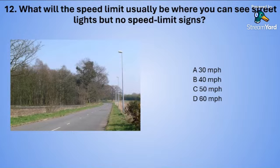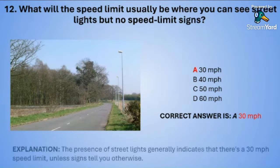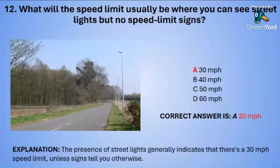The correct answer is A — 30 miles per hour. The presence of street lights generally indicates that there is a 30 miles per hour speed limit, unless there are signs which tell you otherwise.